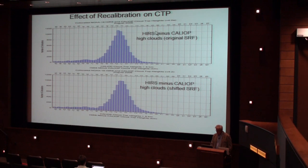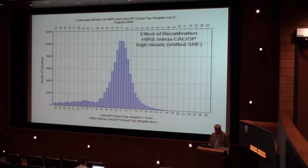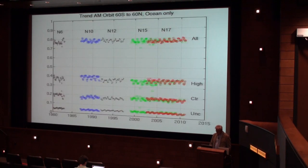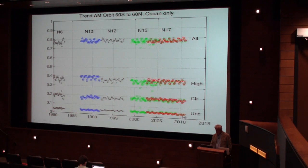We looked at HIRS — the original spectral response function and the shifted spectral response function — with respect to CALIPSO. We're a little lower than CALIPSO, and after correction, we're still a little lower but not bad. You can see we moved a little higher, closer to the cloud top with this recalibration. We're never going to get to the cloud top exactly because, as Andy said, we see into the cloud — probably to an optical depth of around one. So we reprocessed all of this. The AM orbit looks pretty nice and consistent: all clouds sitting at around 75 to 80%, no trend, high clouds not too bad sensor to sensor. The recalibration looks pretty good.